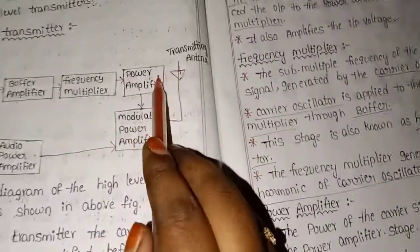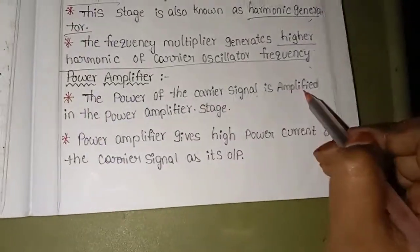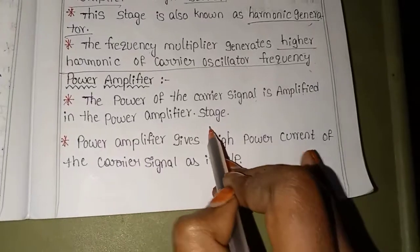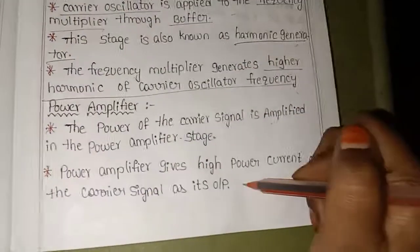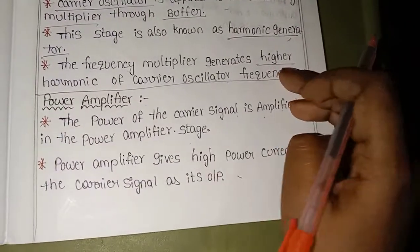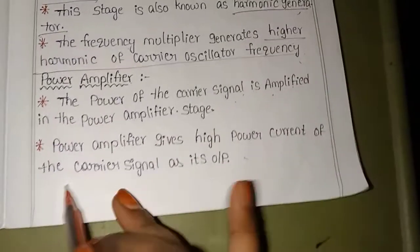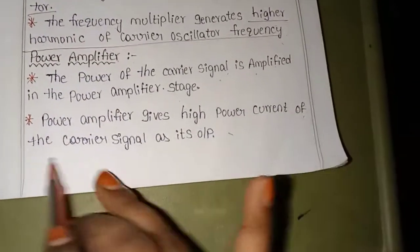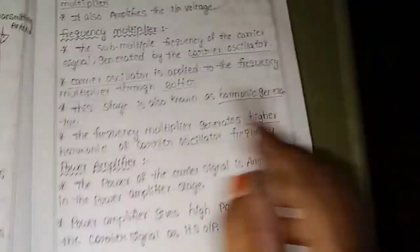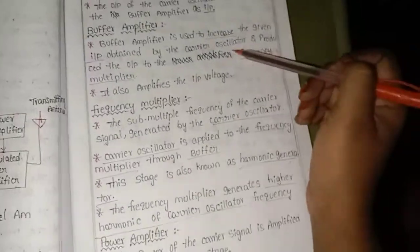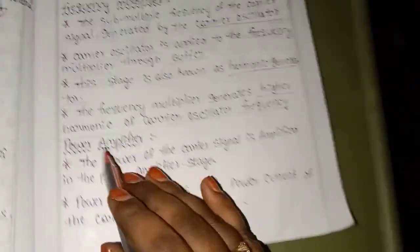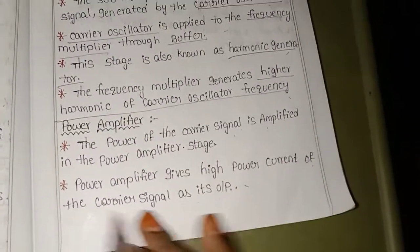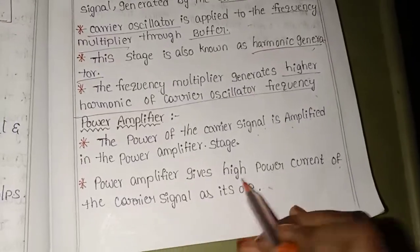Next is the power amplifier stage. The power of the carrier signal is amplified in the power amplifier stage. The power amplifier gives a higher power carrier signal as its output. The carrier oscillator produces a low frequency signal, which is increased to a high frequency carrier signal through this section.